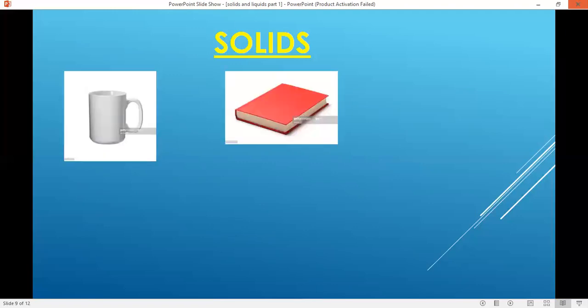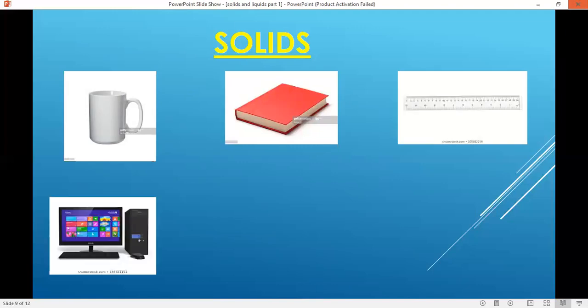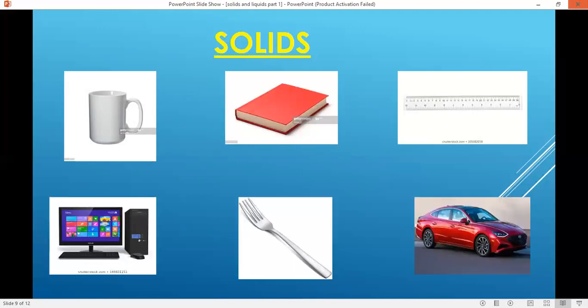In this unit we are going to look at two of these states, that is solid and liquids. Let's discuss solids first. Most of the things we see around us are solids, for example cup, book, ruler, computer, fork and car. All these are the example of solids. There are many more. You can see different solids around you.